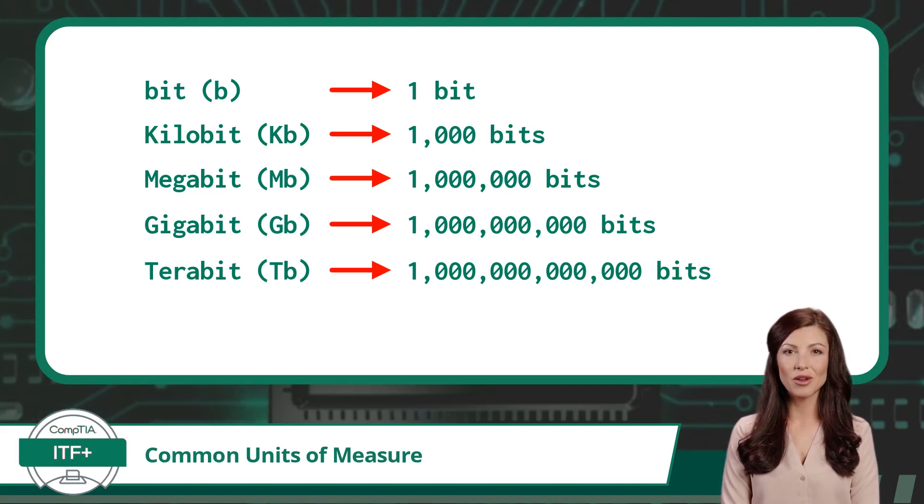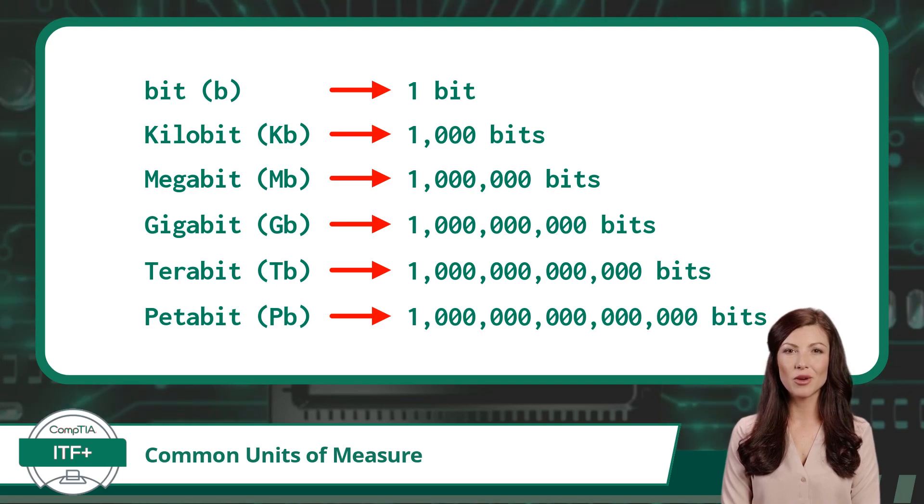The last prefix we need to know for the CompTIA ITF Plus exam is peta. Peta means quadrillion, so a petabit equals 1,000,000,000,000,000 bits.